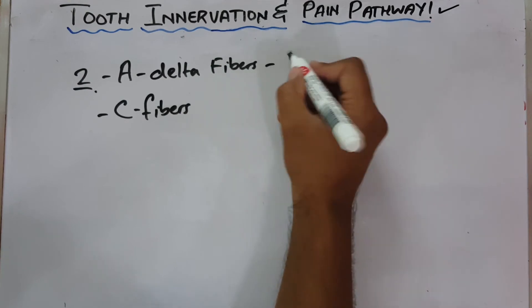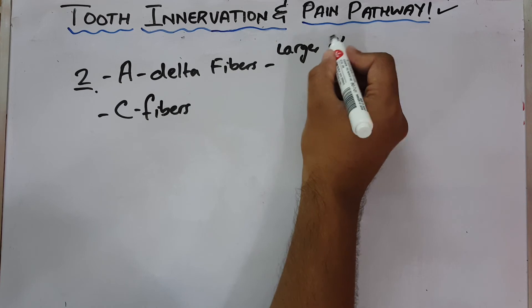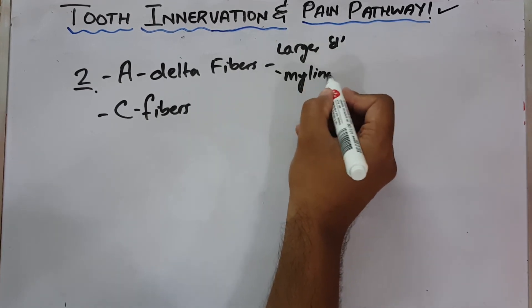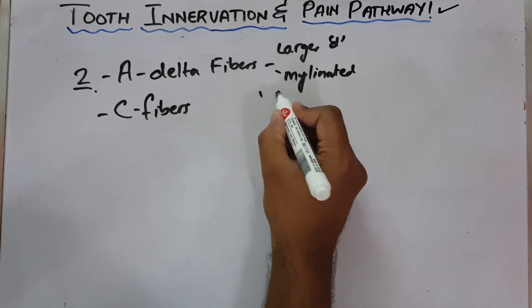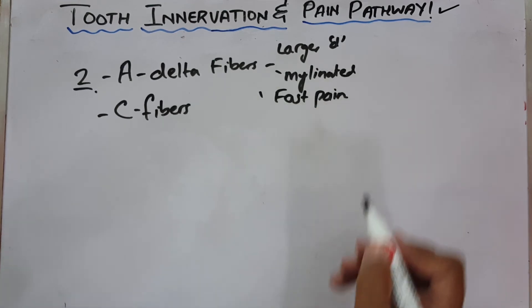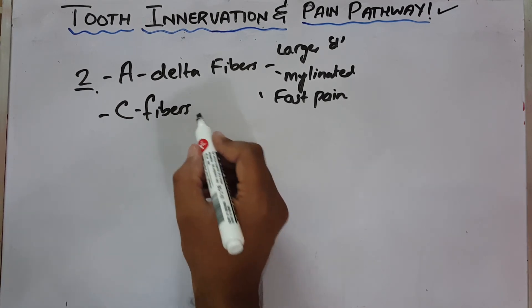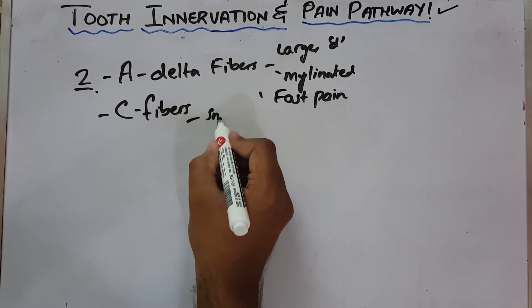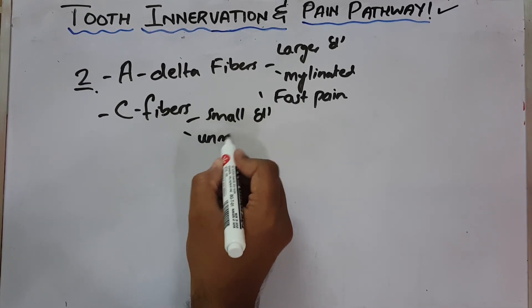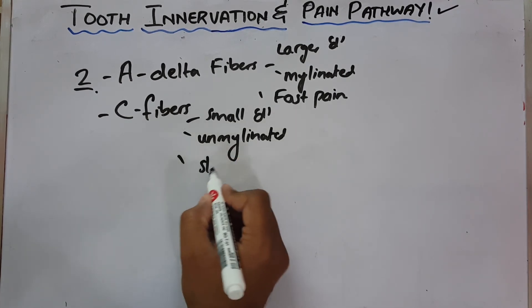The A-delta fibers are larger in diameter. They have a layer of myelin over them, so they are myelinated, and they carry fast pain. The C fibers, as contrary, have smaller diameter. They are unmyelinated and they carry slow or dull pain.